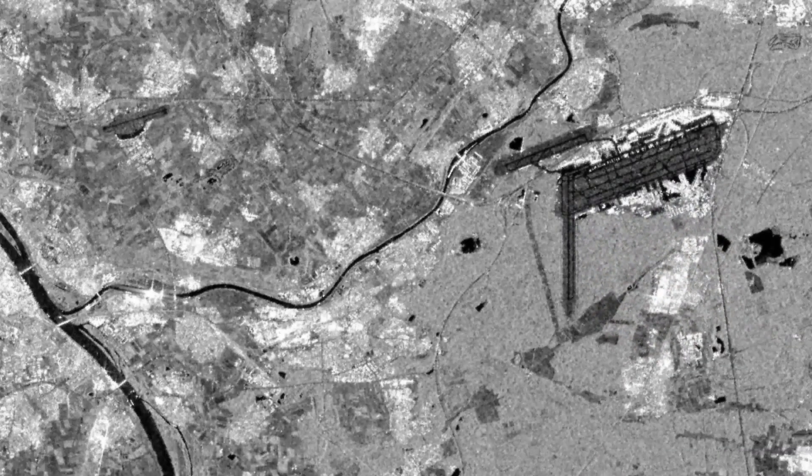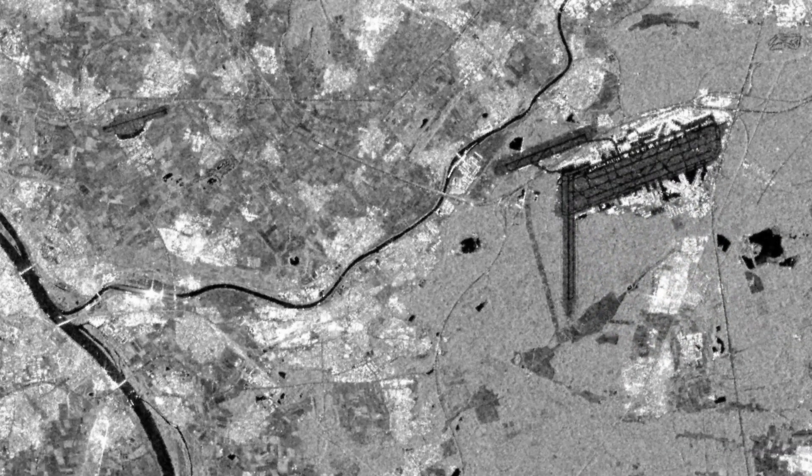The rivers Rhine and Maine also remain black, as most radar signals are reflected by the water and do not return to the sensor.